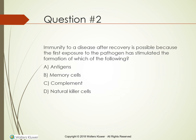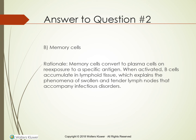Question: Immunity to a disease after recovery is possible because the first exposure to the pathogen has stimulated the formation of which of the following? A. Antigens. B. Memory cells. C. Complement. D. Natural killer cells. The answer is B, memory cells. Memory cells convert to plasma cells on re-exposure to a specific antigen. When activated, B-cells accumulate in lymphoid tissue, which explains the phenomenon of swollen and tender lymph nodes that accompany infectious disorders.